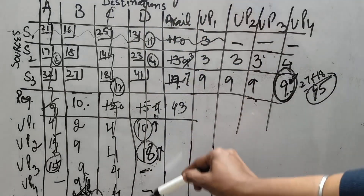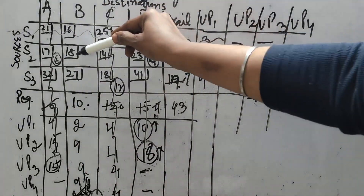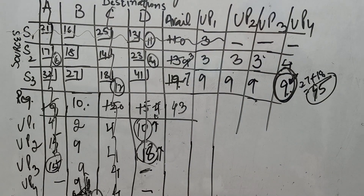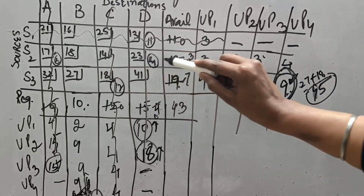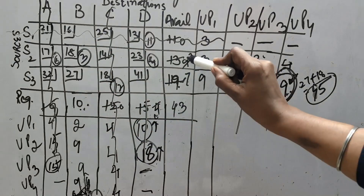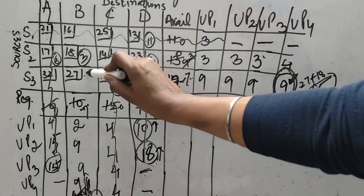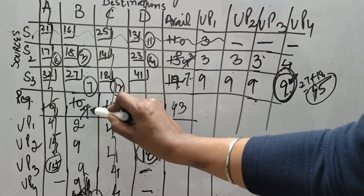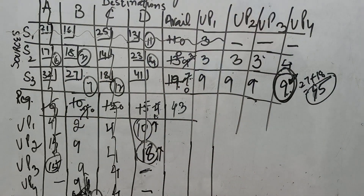Now this column and the previous column are both deleted. Only two values remain in this row, so we need not calculate unit penalties further — we can directly assign them. Out of 18 and 27, minimum is 18. In front of that, 3 was left and 10 is required, so we allot 3. It becomes 0 and 7 remains. Here also 7 is there — we allot 7. With this it becomes 0. All availabilities and requirements have become 0, so this is the optimal solution reached with VAM.